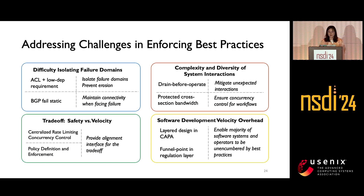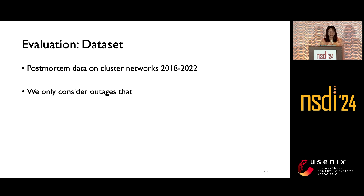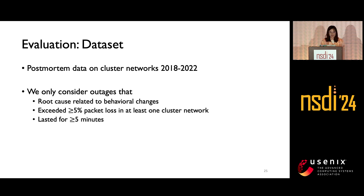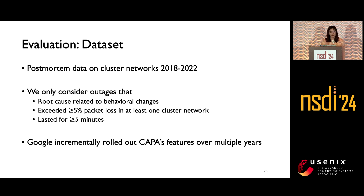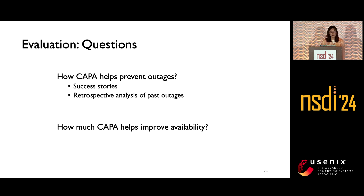To evaluate our system, we looked at post-mortem data on cluster networks over the past few years, considering only outages with root causes related to behavior changes, exceeding 5% packet loss and lasting more than five minutes. Since Google incrementally rolled out KAPPA features over multiple years, it's hard to distinguish pre- and post-KAPPA incidents cleanly. So we address two questions: how can KAPPA help prevent outages — looking at success stories and retrospective analysis — and how does KAPPA help improve availability, through quantitative studies.